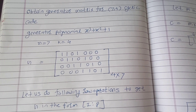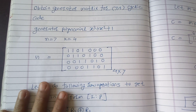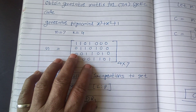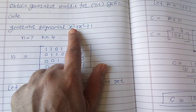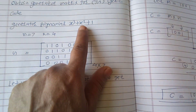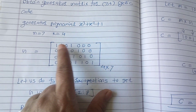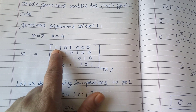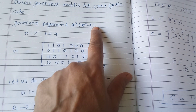Let us obtain the generator matrix for the generator polynomial x³+x²+1. We are obtaining this for a cyclic code with n=7 and k=4. The first step is to write the generator polynomial in binary form: x³ coefficient is 1, x² coefficient is 1, x is not there so 0, and x⁰ coefficient is 1, giving 1101.